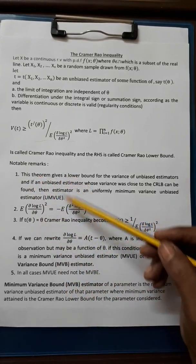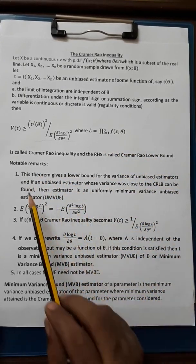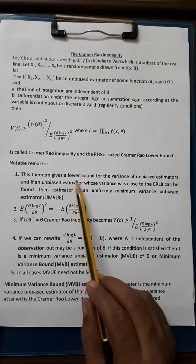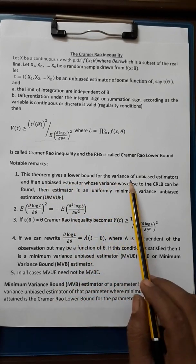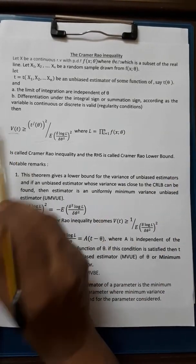And some remarks about this Cramér-Rao inequality. This theorem gives a lower bound for the variance of unbiased estimator. That is V(t).